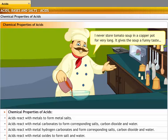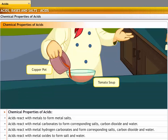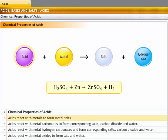I never store tomato soup in a copper pot for very long. It gives the soup a funny taste. Tomato soup, being acidic, reacts with copper and that is what causes the change in its taste. Acids react with metals to form metal salts. In this reaction, hydrogen gas is liberated.